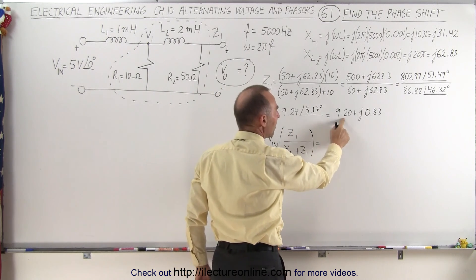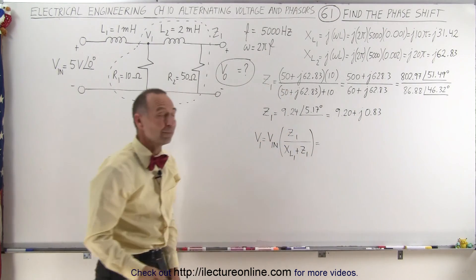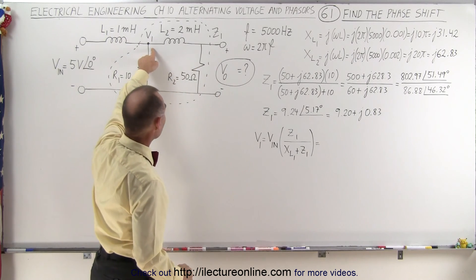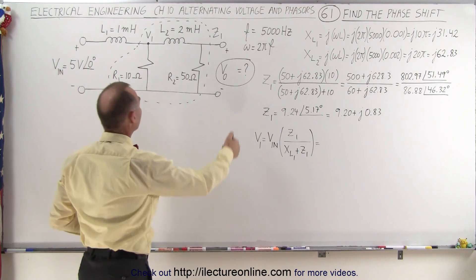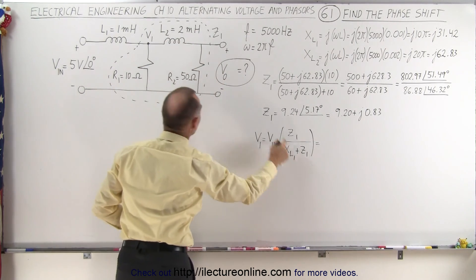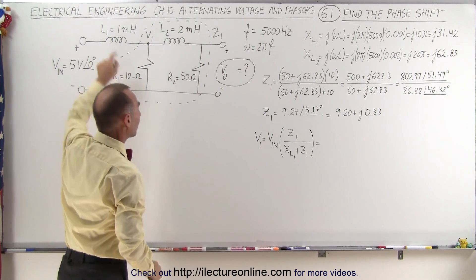Or in the real and imaginary part format. Now we calculate V1 as a function of the input voltage where we use the voltage divider. We take the impedance of this part of the circuit and divide it by the sum of the impedance plus the reactance across the inductor.